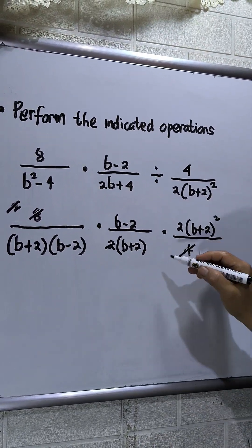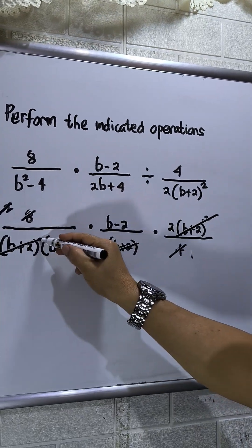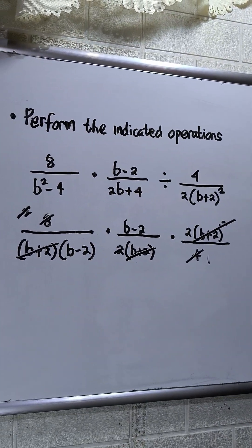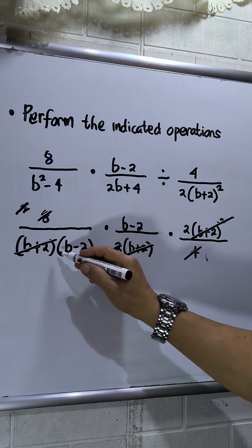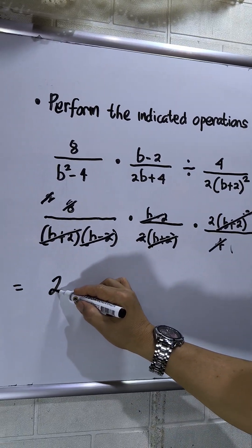The b plus 2 squared crosses out because of this b plus 2. I now have b minus 2, so the final answer is b minus 2.